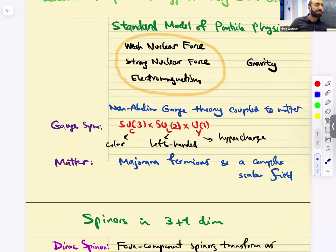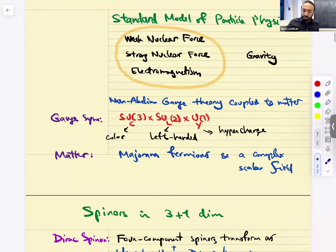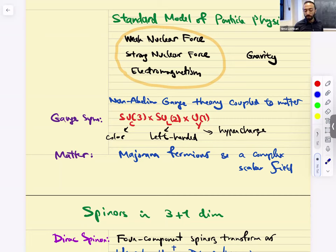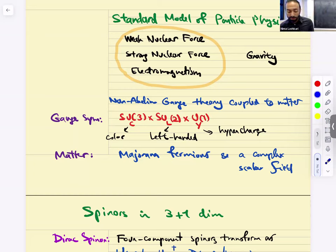You know what gravity is, hopefully. A non-Abelian gauge theory coupled to matter is the model that we picked. It's a gauge theory, and the gauge group is SU(3)_C — C for color — SU(2)_L, L for left-handed, U(1)_Y, Y for hypercharge. The matter is fermions, two-component fermions.